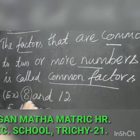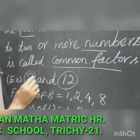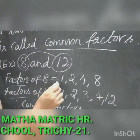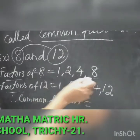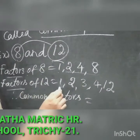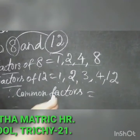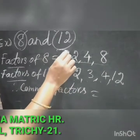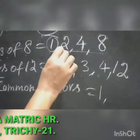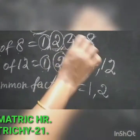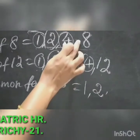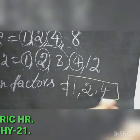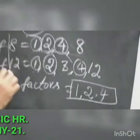For example, let us take 2 numbers: 8 and 12. First, find the factors of 8: 1, 2, 4, and 8. The factors of 12 are 1, 2, 3, 4, and 12. Now compare the two sets of factors and find which are common. The number 3 is not in the factors of 8, so we omit it. The common factors of 8 and 12 are 1, 2, and 4.